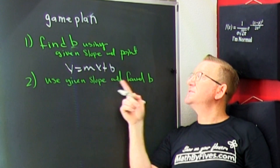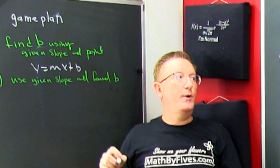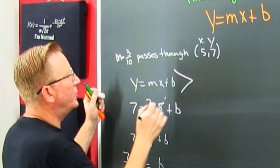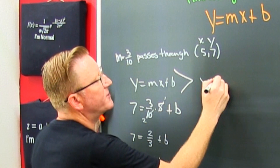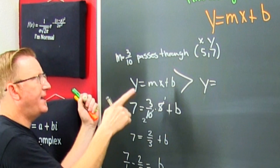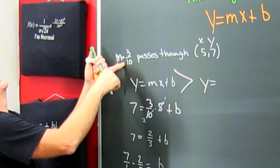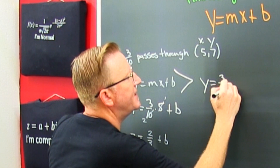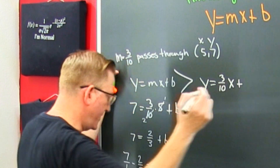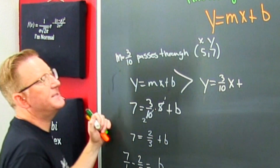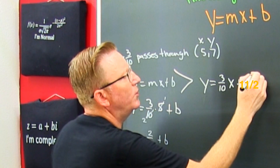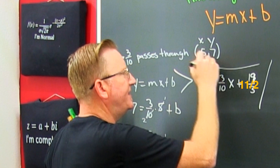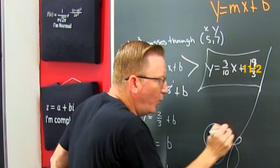Now we're going to use the given slope and the found b to write the equation of a line. My y is equal to — what's my m? They gave it to me. This is 3 tenths x plus — what was my b? 19 thirds. Woo!